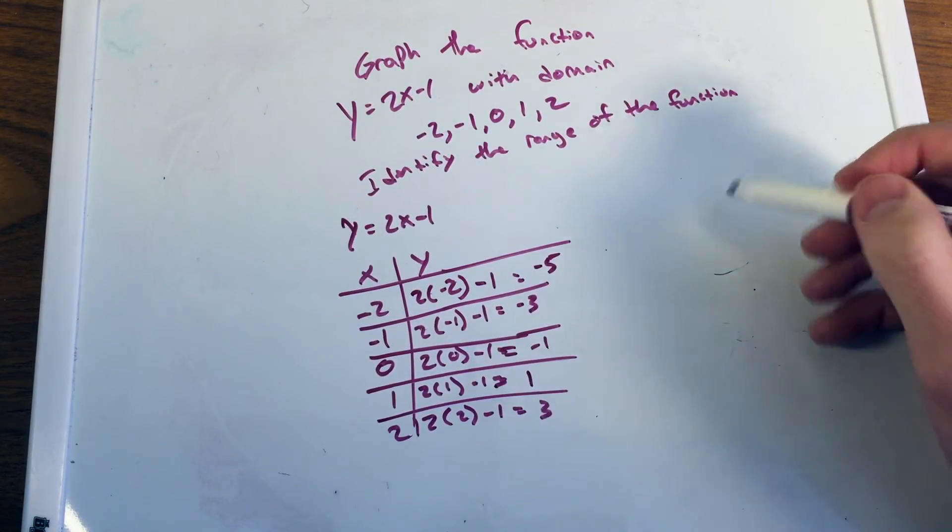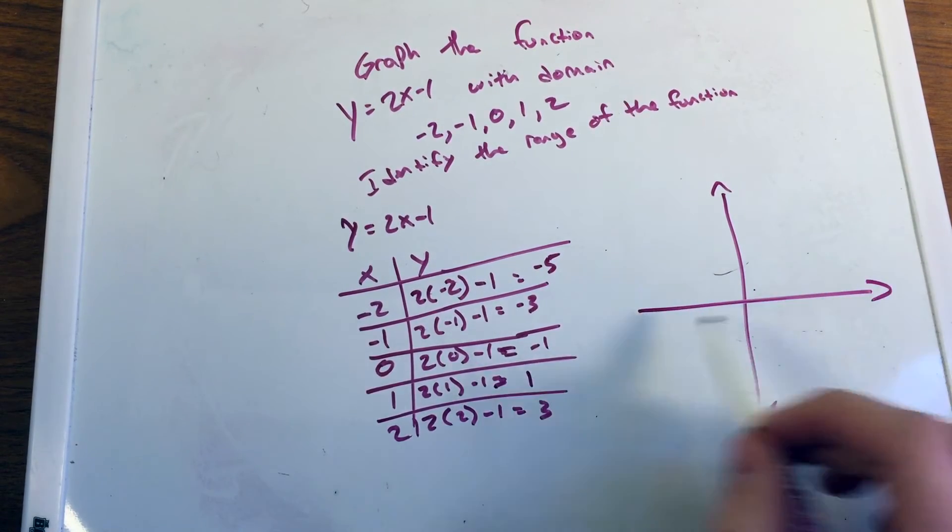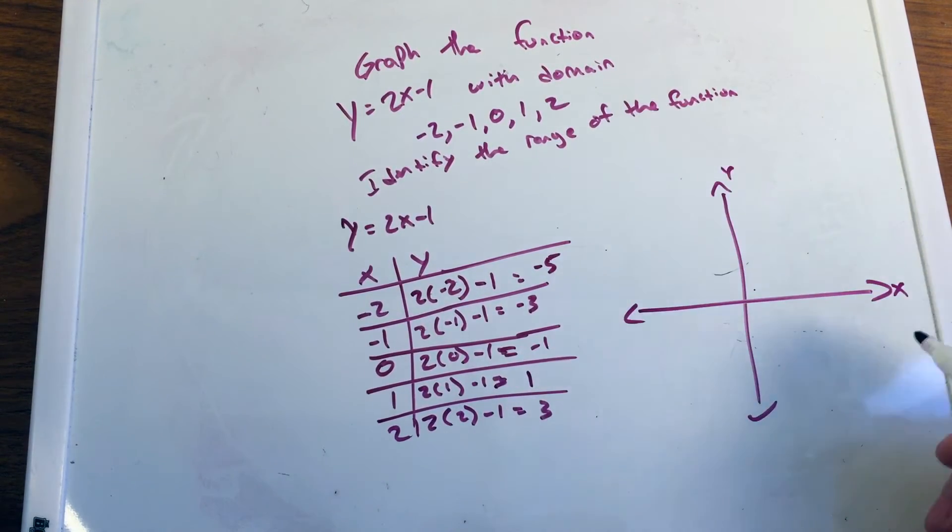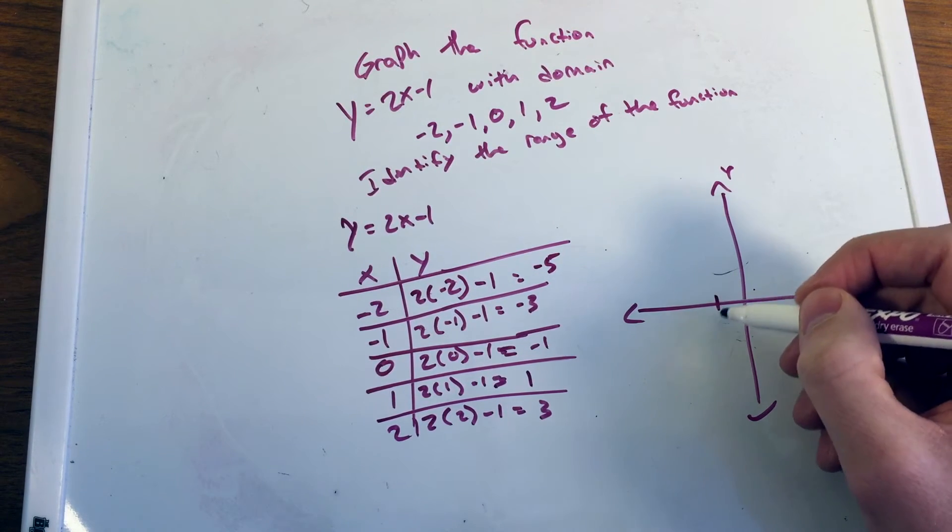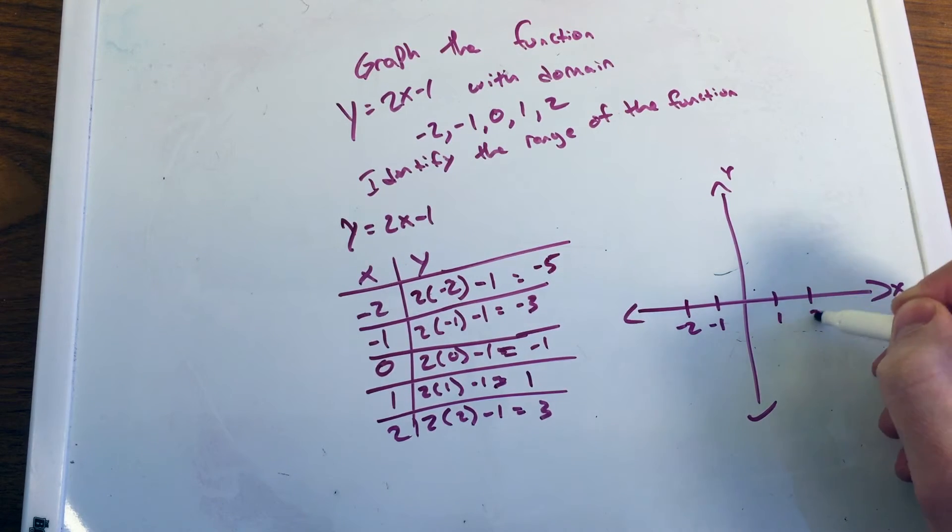And so if I were to graph this, I have to make an x and y plane here. x and y. And so we're going to make our x plane, let's go from just negative 1 here, negative 2, 1, positive 2.